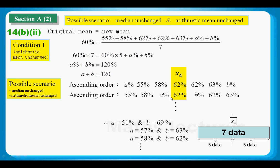So one of the possible values is 51 for A and 69 for B. However, I can also put A and B get closer to the median, just like what I'm pointing now. In this case, A can be 57 because A can be in the range between 58 and 62.